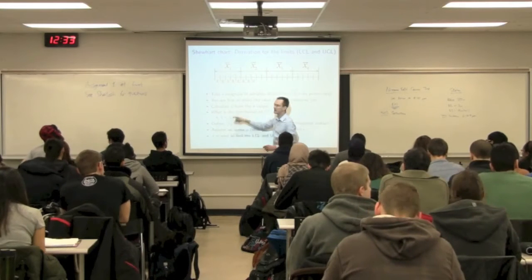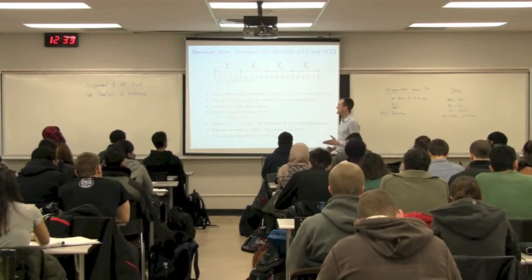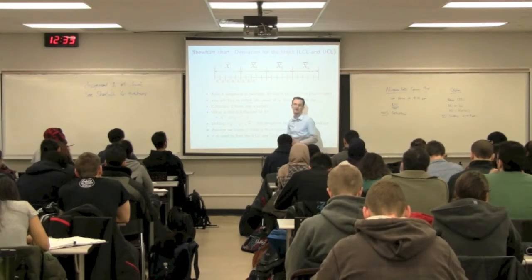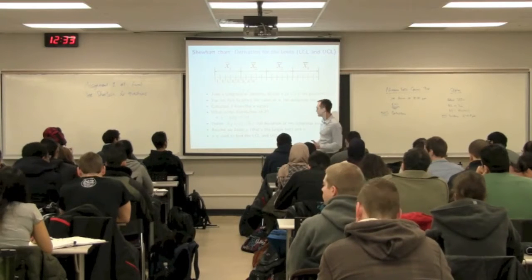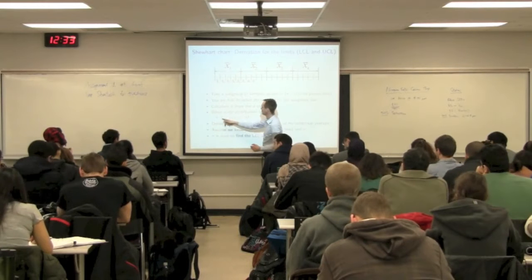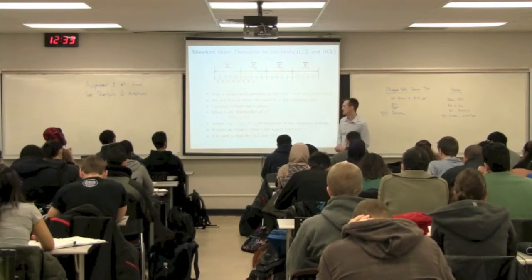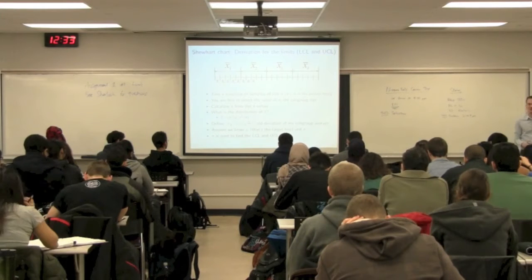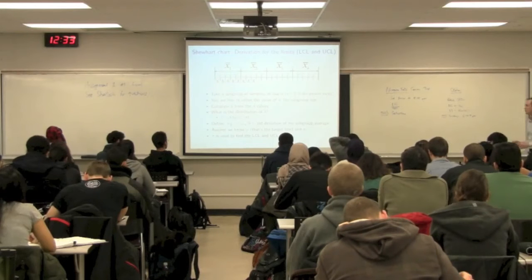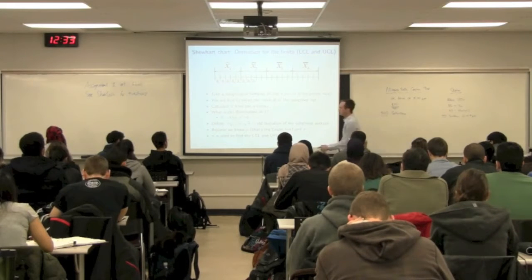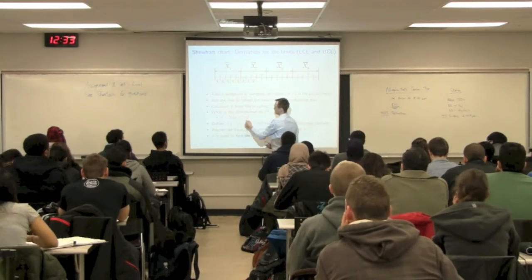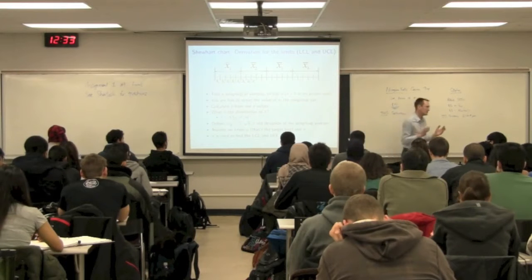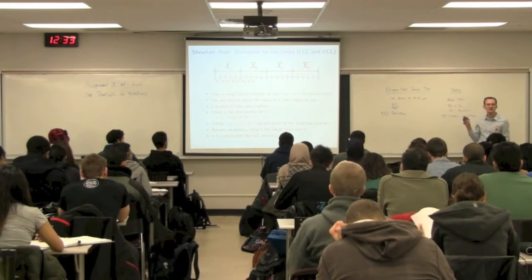That subgroup average is distributed normally and has the same mean as the raw data. So my raw data comes in with a certain mean μ that I don't know, and a certain variance that I don't know. But that subgroup average will be distributed normally about the same mean but with variance σ²/n. It is that subgroup's standard deviation or variance that will affect the control limits.